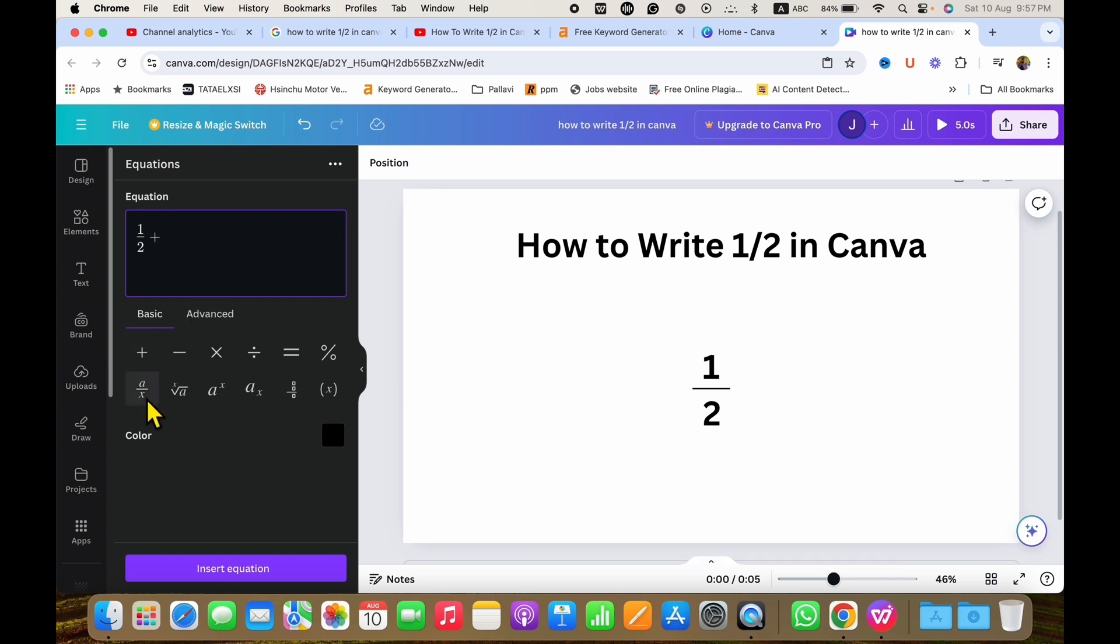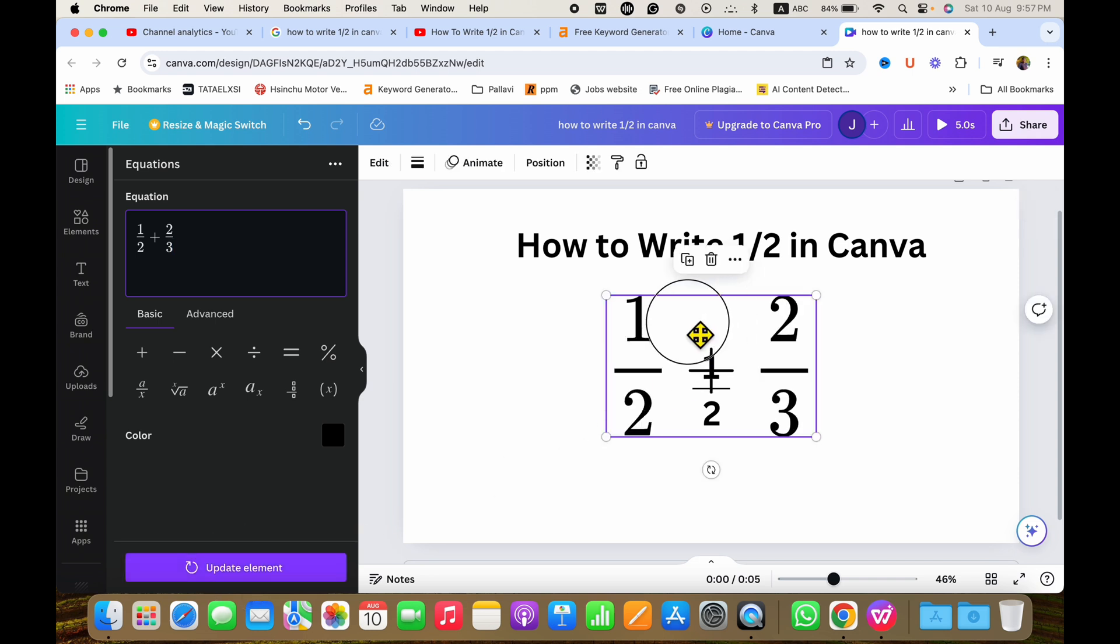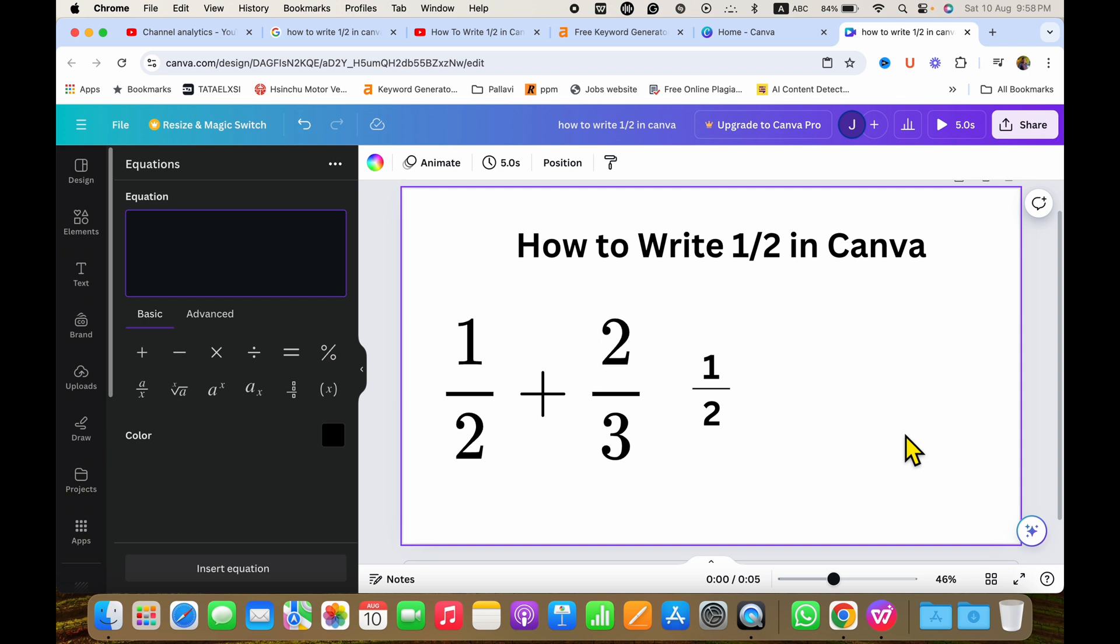Then click on the fraction and just type the numbers, and after typing the numbers you need to click here on the insert equation and this will insert the fraction or the equation that you are trying to write in the Canva.